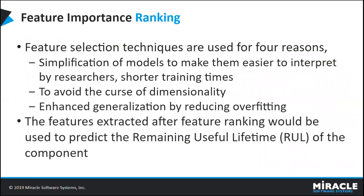Feature importance ranking: Once features are added into the dataset, not all of them are equally helpful for predicting the remaining useful lifetime, so feature importance ranking must be performed. The main four reasons are: to make the dataset more understandable and easier to interpret, to shorten the training period, to avoid the curse of dimensionality, and to reduce overfitting. After feature importance ranking, we can predict the remaining useful lifetime of the component.